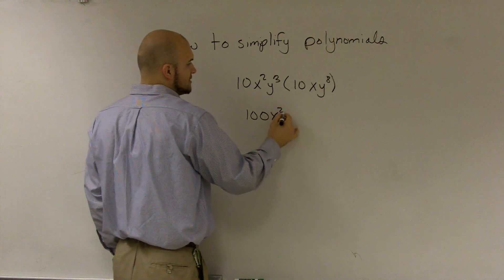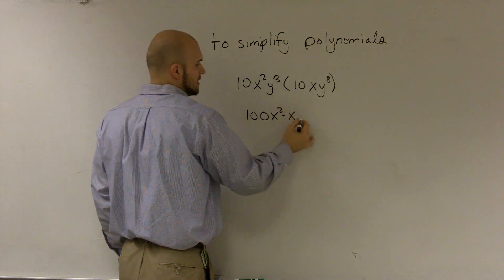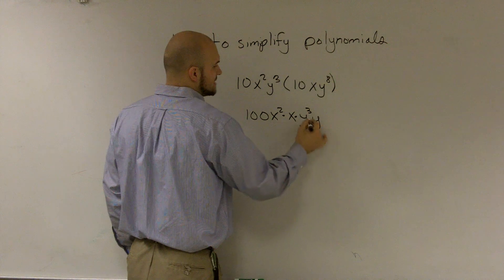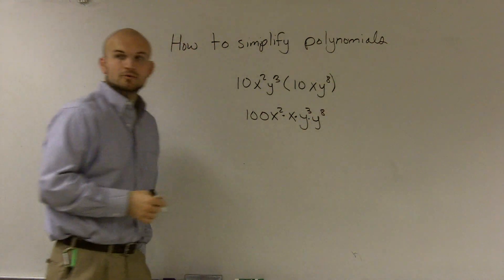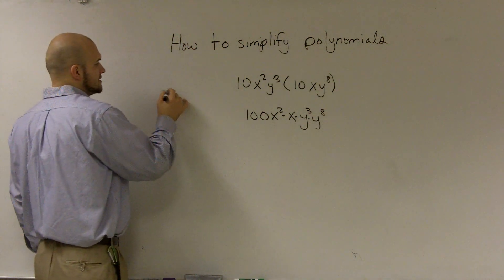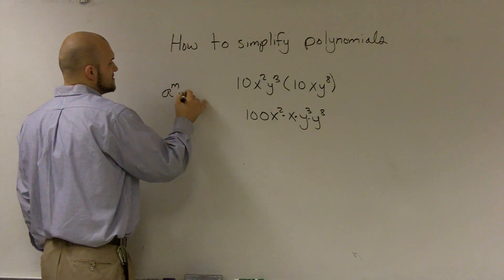Then I'm going to have x squared times x, and y cubed times y to the eighth. Now, the one rule you need to remember with the law of exponents is a to the m times a to the n.